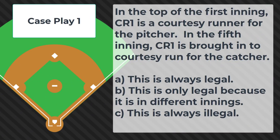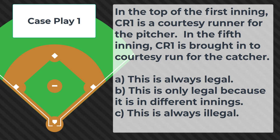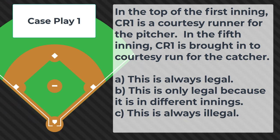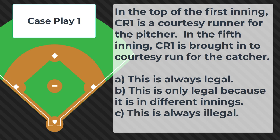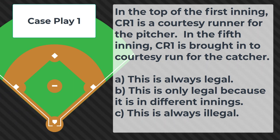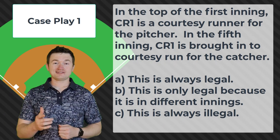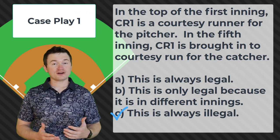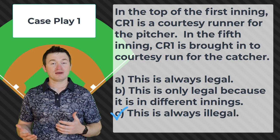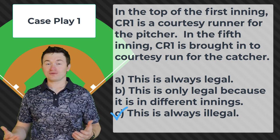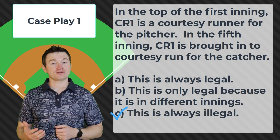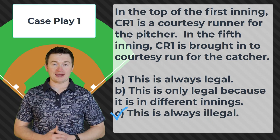Case play number one: in the top of the fifth inning CR1 is a courtesy runner for the pitcher. In the fifth inning CR1 is brought in to courtesy run for the catcher. Is this: A — always legal, B — only legal because it is in a different inning, or C — always illegal? The correct answer is C, always illegal, because a courtesy runner throughout the entire game can only run for the pitcher or the catcher — not both roles at any point.